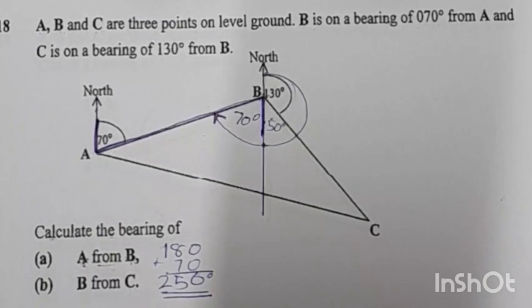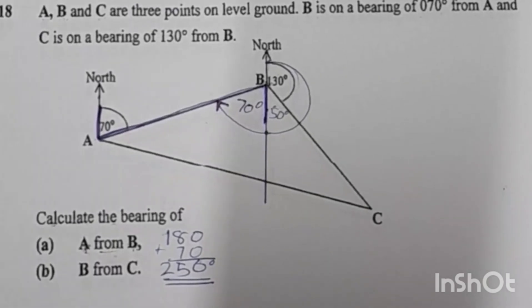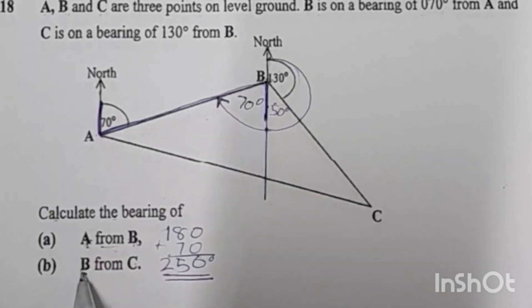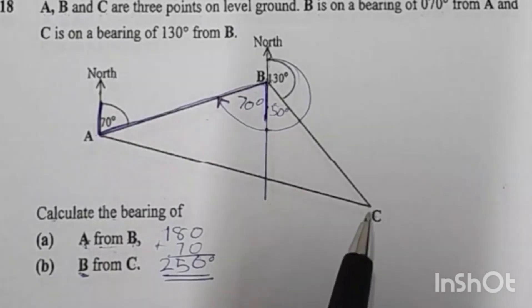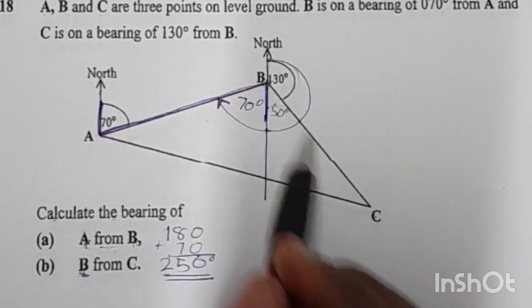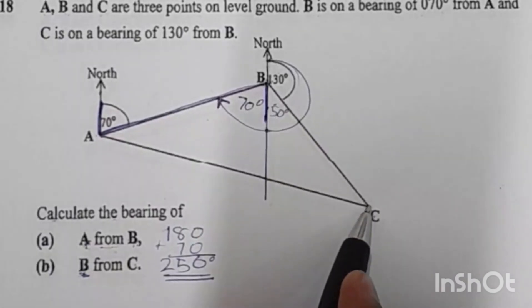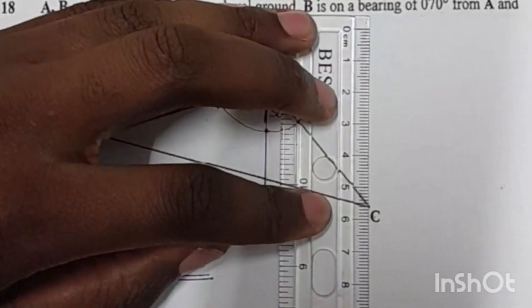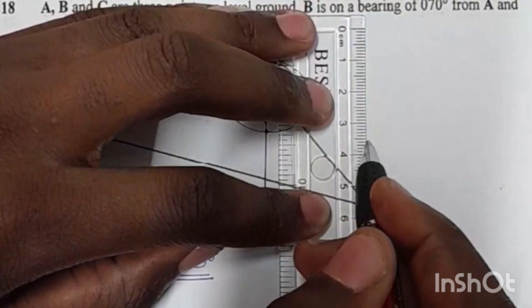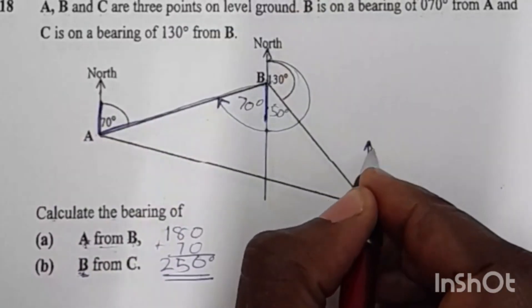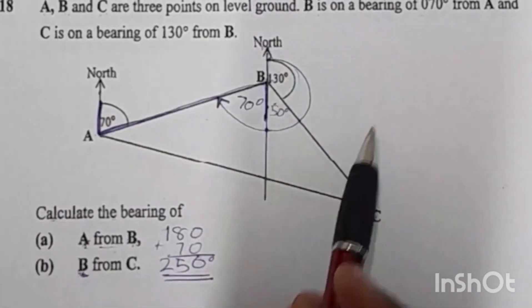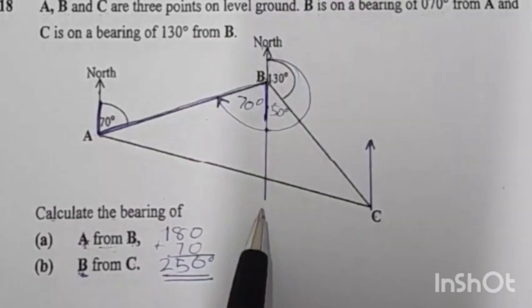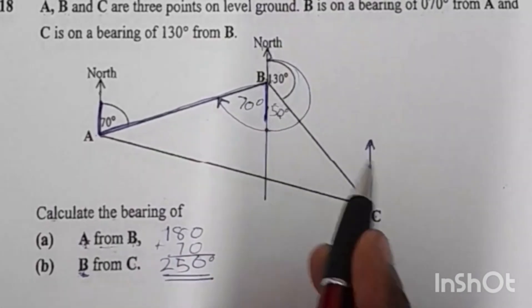Now they want the bearing of B from C — meaning we are standing at C. Because we are standing at C, we draw a north at C. Again, this north and this north are parallel lines with a transversal, and you can see another Z-shape is formed. So this alternate angle is also 50 degrees.